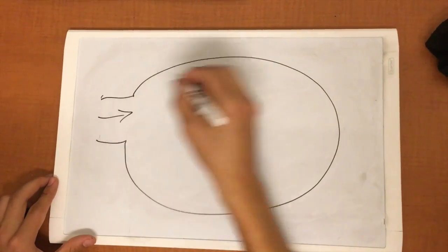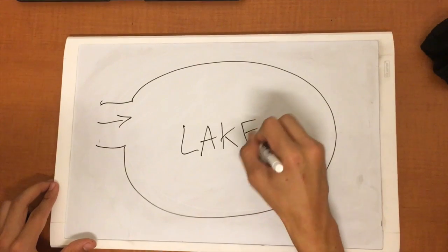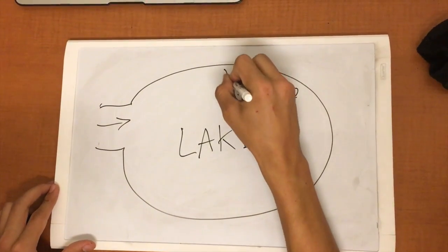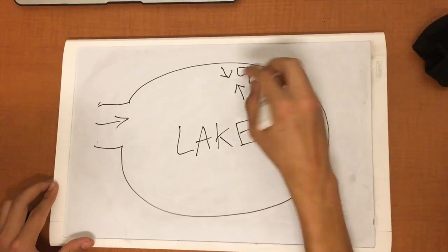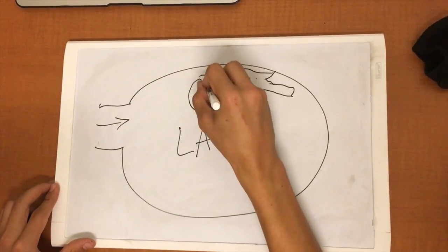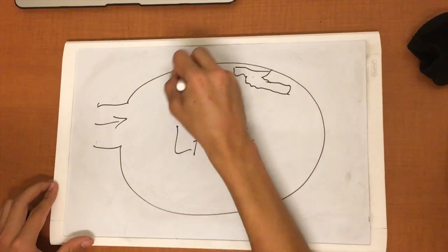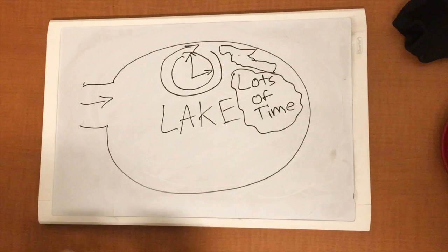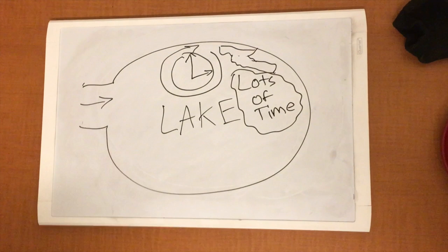Lithification is the process by which deposited loose grains of sediment are converted into rock. Lithification may occur at the time a sediment is deposited or later. Cementation is one of the main processes involved, particularly for sandstones and conglomerates. In this diagram, a rock was deposited into a lake next to another rock. Over lots of time, these rocks had tremendous amounts of pressure pushing against each other and eventually converted into one rock.